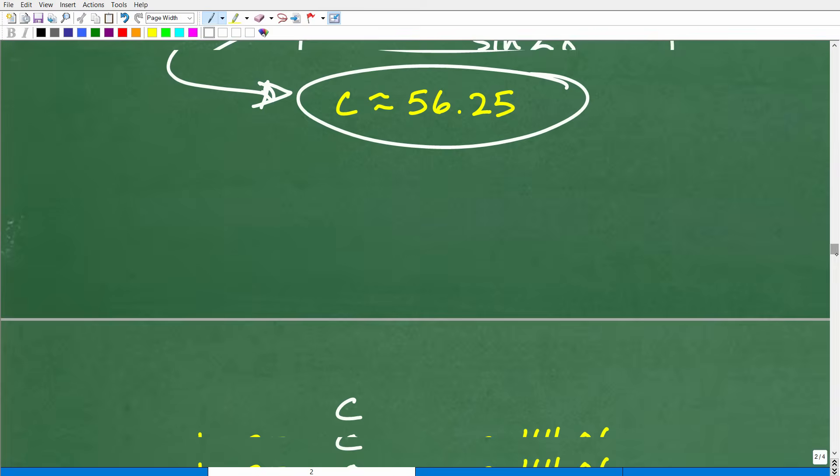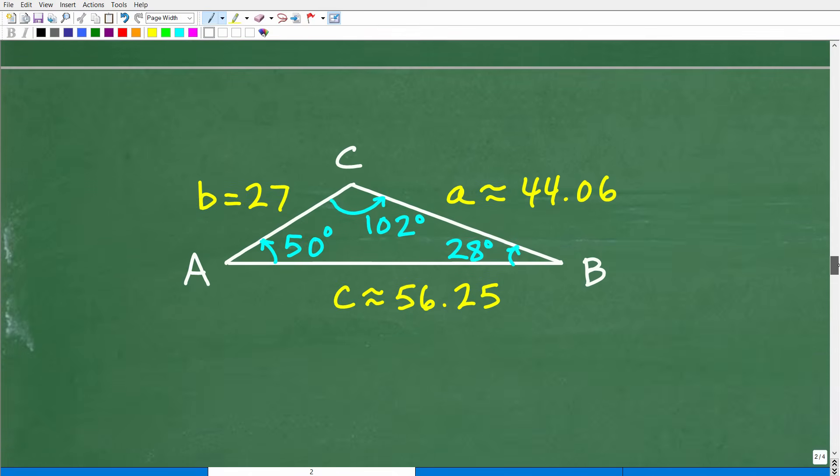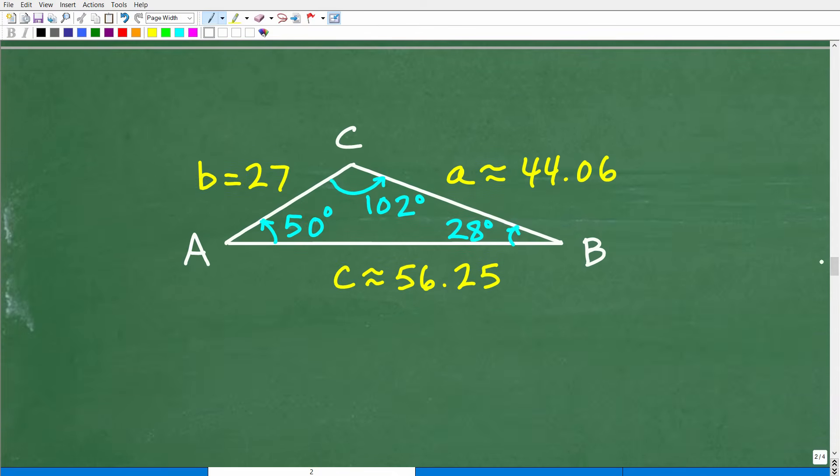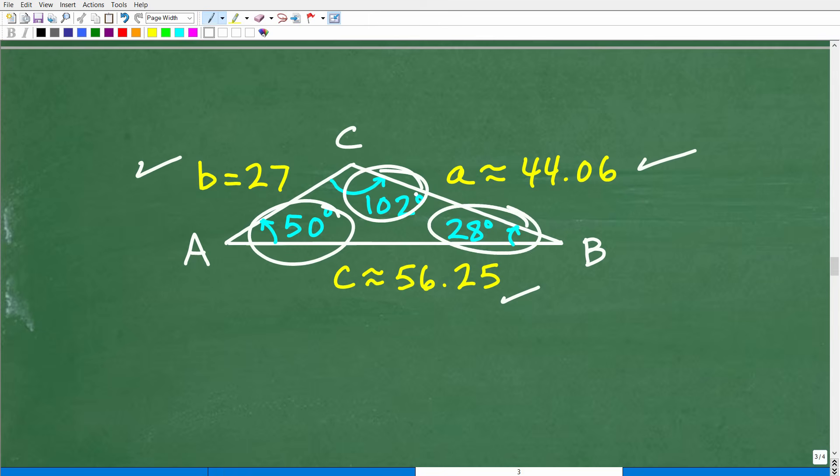So the final answer would be this. This is the complete solution to this triangle. So we have all sides of the triangle. And of course, we were given all the angles of the triangles originally. But this is what it means to solve a triangle. And again, this is an illustration of how we can use the law of sines.